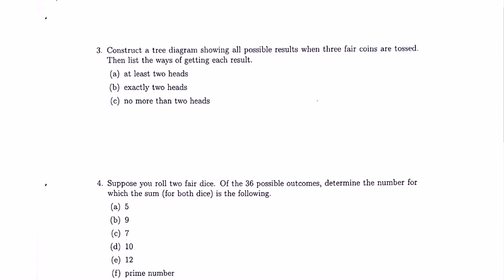Number three: construct a tree diagram showing all possible results when three coins are tossed. So let's make the tree diagram. This is the same as flipping a coin three times.